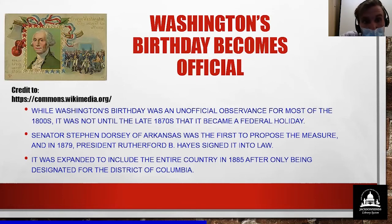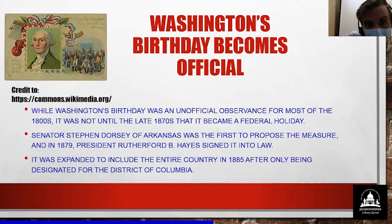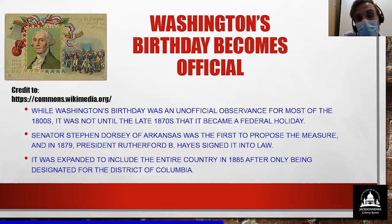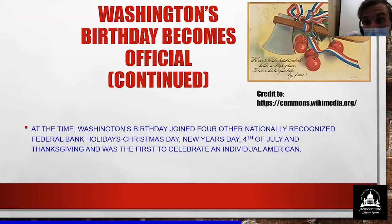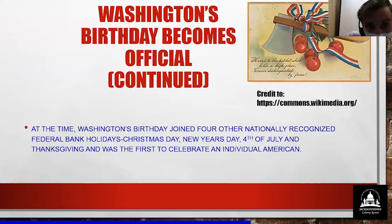Washington's birthday becomes official. While Washington's birthday was an unofficial observance for most of the 1800s, it was not until the late 1870s that it became a federal holiday. Senator Stephen Dorsey of Arkansas was the first to propose the measure, and in 1879, President Rutherford B. Hayes signed it into law. It was expanded to include the entire country in 1885 after only being designated for the District of Columbia. Washington's birthday joined four other nationally recognized federal bank holidays: Christmas Day, New Year's Day, the 4th of July, and Thanksgiving, and was the first to celebrate an individual American.